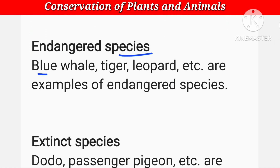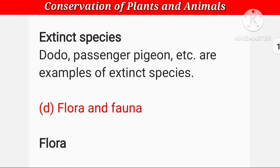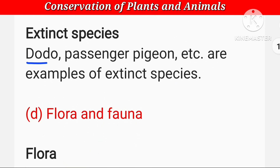Endangered species के examples हैं: blue whale, tiger, leopard, etc. — यह बहुत कम बचे हैं, इनका जीवन खतरे में है, सुरक्षा नहीं की तो सारे खत्म हो जाएंगे। Extinct species के examples हैं: dodo, passenger pigeon, etc. — यह खत्म हो चुकी हैं।